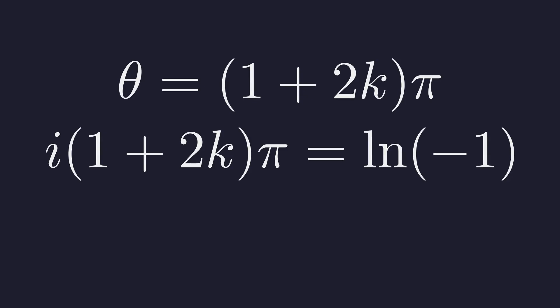The natural logarithm of negative 1 is not a single value, but an infinite set of values. Notice that when k is equal to 0, the expression simplifies to i pi, which is the principal value we found earlier.